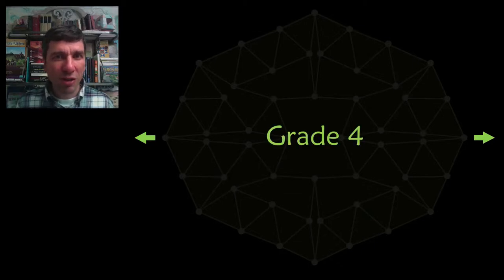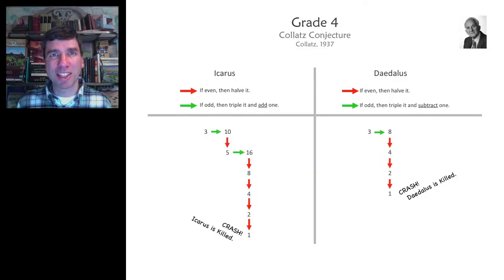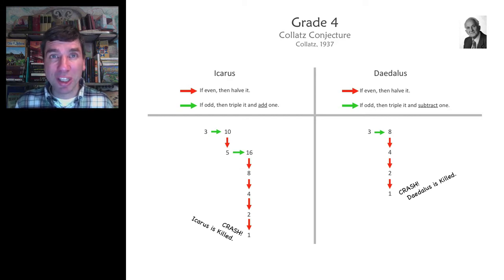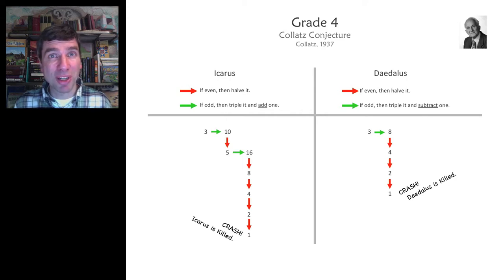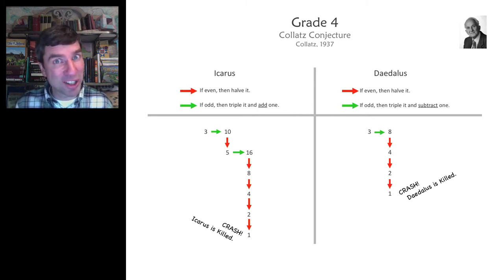The unsolved problem for Grade 4 is the Collatz conjecture from 1937. If you have not seen this problem, click on the centre of the screen and you will be whisked away to experience it in all of its glory with kids in the classroom trying to solve it by your side.